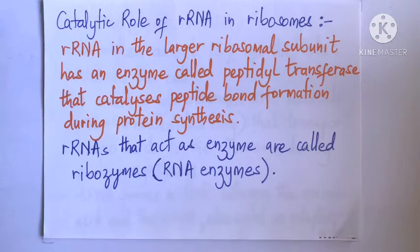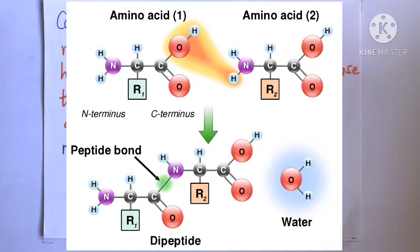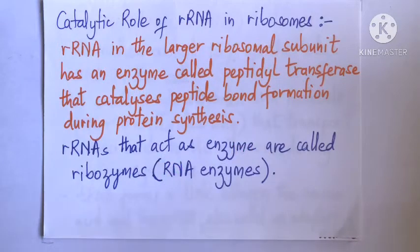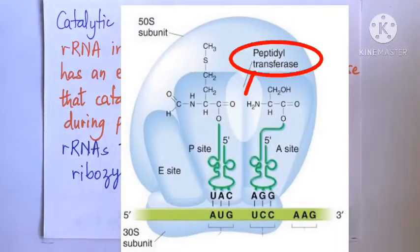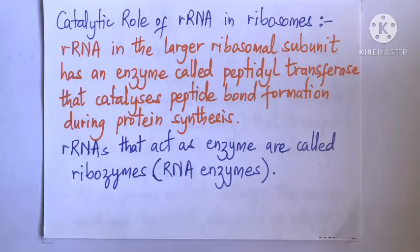Additionally, rRNAs in the ribosome have a catalytic or enzymatic role during protein synthesis. The rRNA in the larger ribosomal subunit has an enzyme called peptidyl transferase that catalyzes peptide bond formation. A peptide bond is the amide bond between two amino acids, formed by joining the carboxyl group of one amino acid with the amino group of another by elimination of a water molecule. Such rRNAs that act as enzymes are called ribozymes.